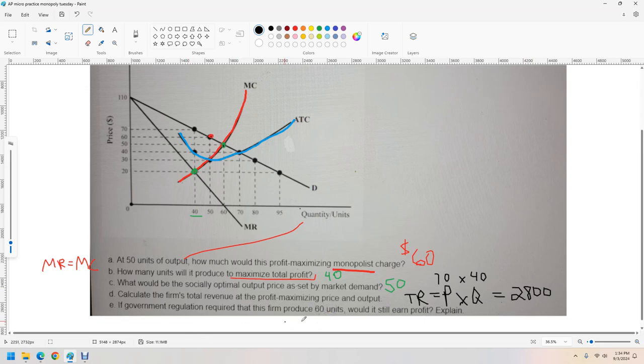If government regulation required this firm to produce 60 units, would it still earn a profit? Let's go to 60 units. What's the price we can sell it at? 60 units right here - we'd sell at a price of 50.